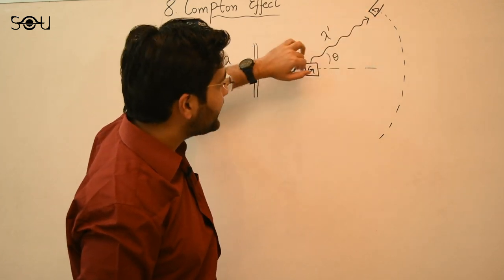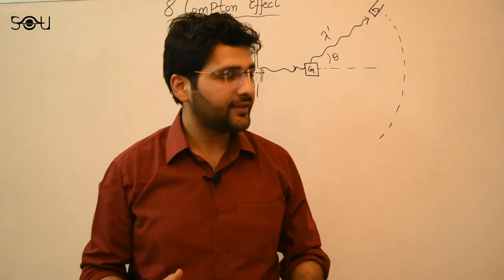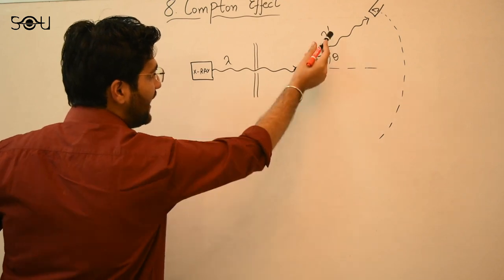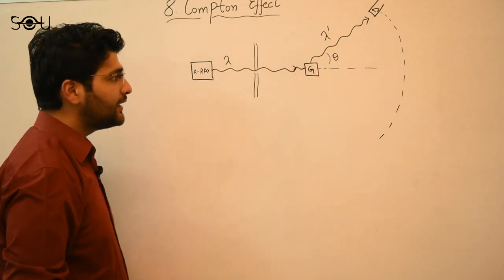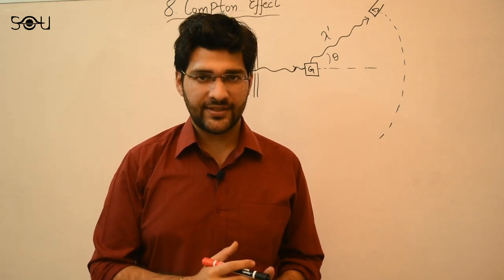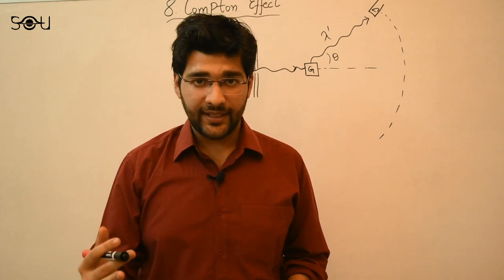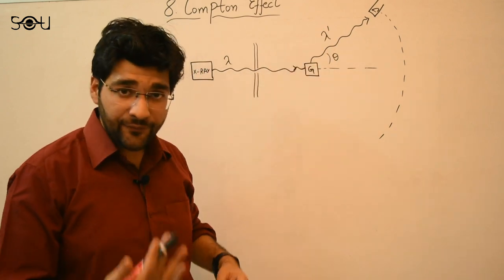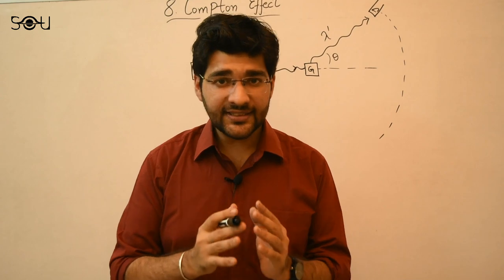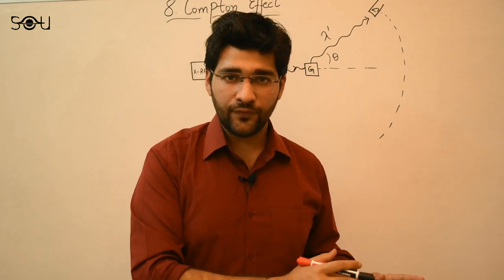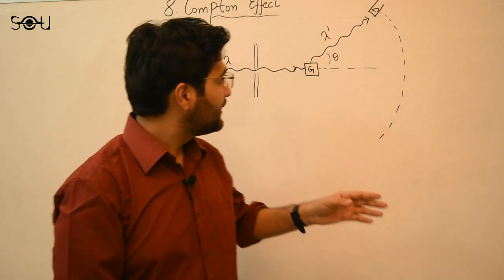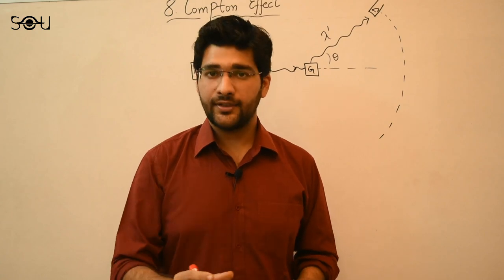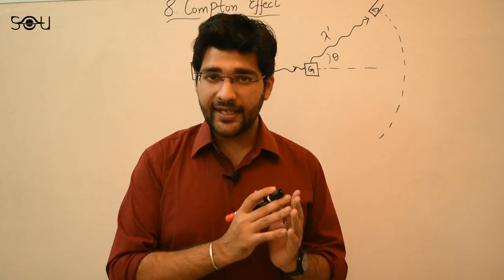A detector D can detect the scattered x-rays at any angle. The problem is that the scattered x-ray photons have a different wavelength λ' than the emitted wavelength λ. According to classical theory, when electromagnetic waves scatter off charged particles their frequency, energy, and wavelength must remain the same — but Compton observed the wavelength changed. The scattering of highly energetic x-ray photons by charged particles such as electrons is known as the Compton effect.